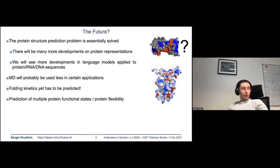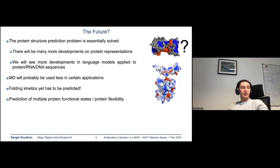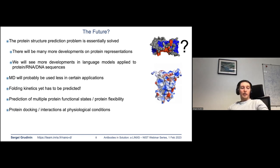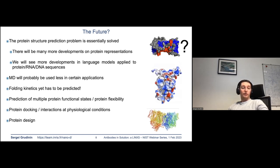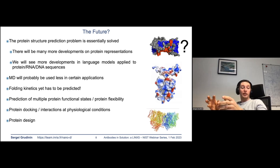There has been progress around CASP15 in protein docking, with many attempts to predict it at much higher accuracy. We still need to predict protein multiple states and protein flexibility, simulate protein behavior at physiological conditions, and there are exciting developments around the inverse problem — protein design — where if we know a shape serving a certain function, we can design a sequence that folds into that three-dimensional shape.